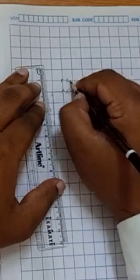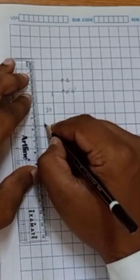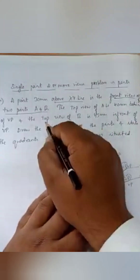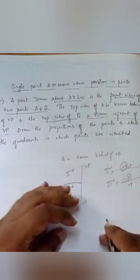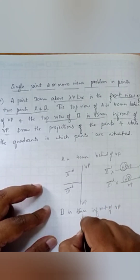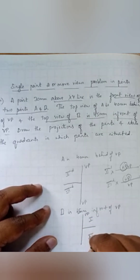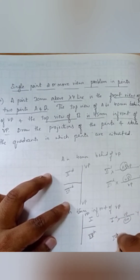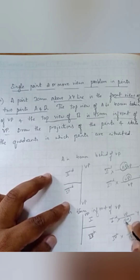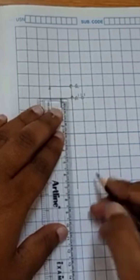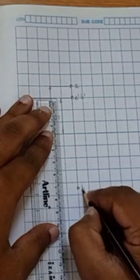Similarly, the top view of B is 45mm in front of VP. In front of VP means two chances — either in the first quadrant or in the fourth quadrant. In both cases, the top view lies below the XY line. So we draw 45mm below the XY line — that's four and a half boxes — and put a point. This is the top view of B.